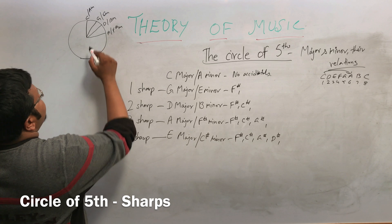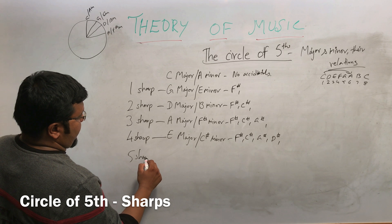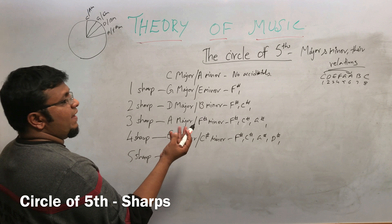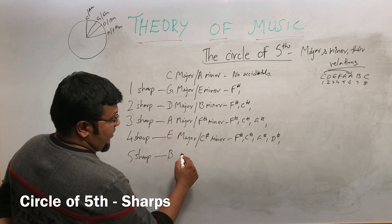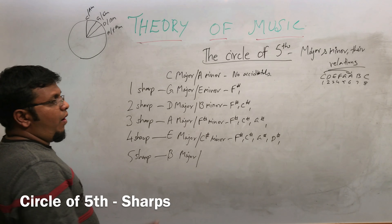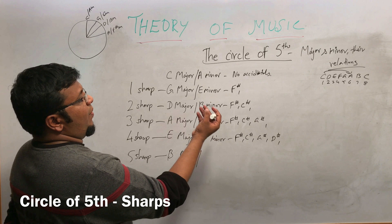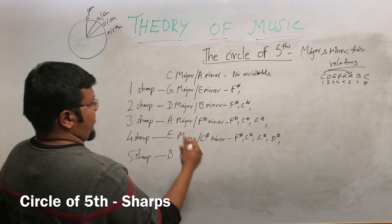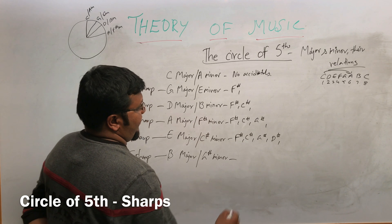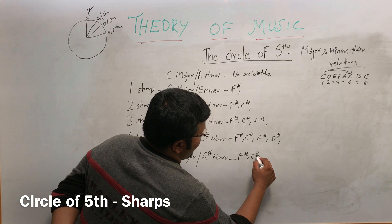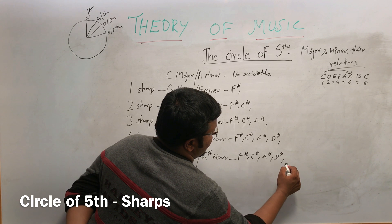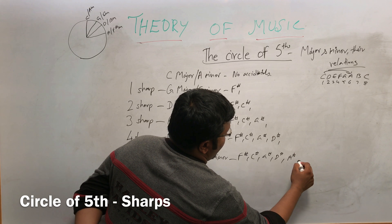Now the five-sharp scale. From E, counting E, F-sharp, G, A, B — that gives us B major. B major relates to G-sharp minor. The sharps are F, C, G, D, and A.